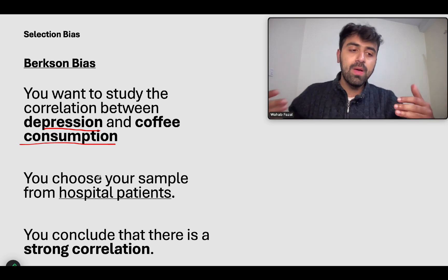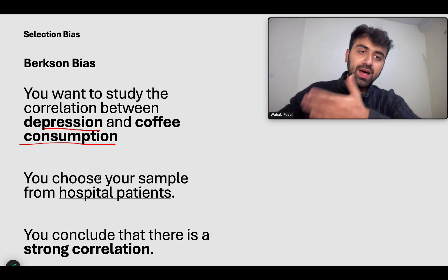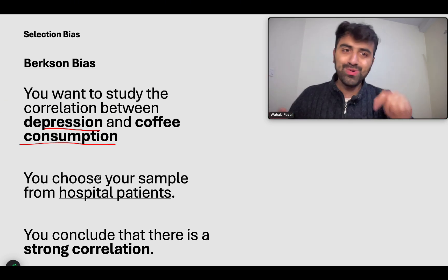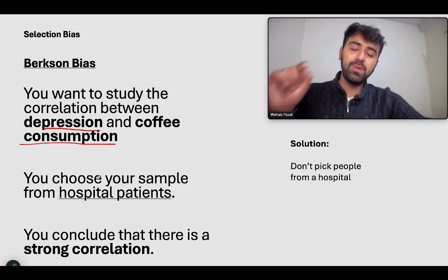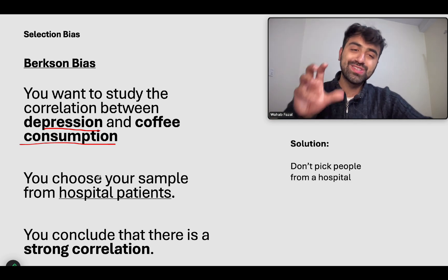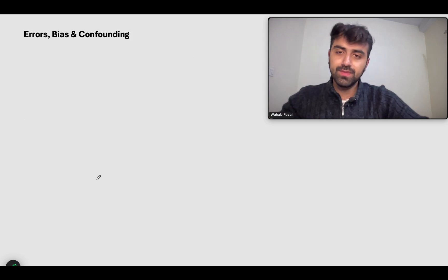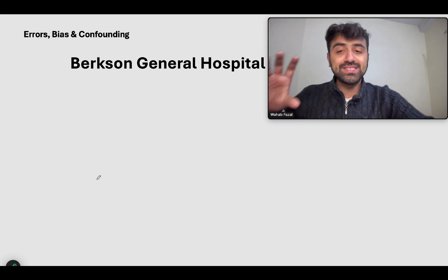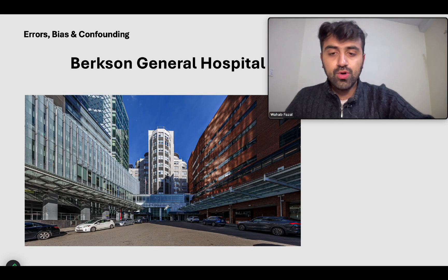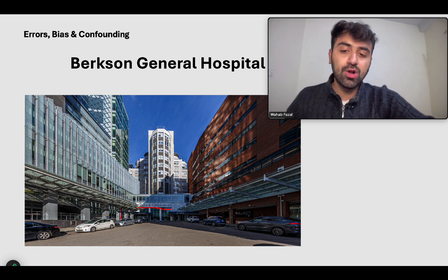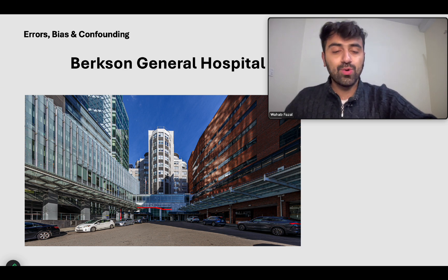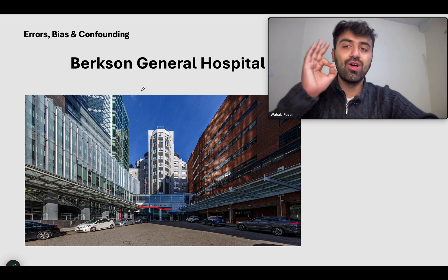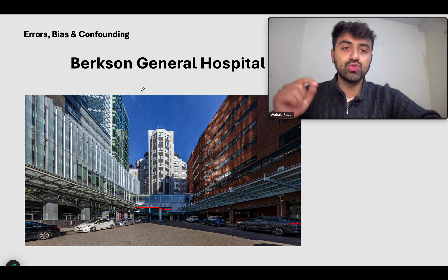If you're trying to study depression in the ICU, then maybe you can take patients from the ICU. But if you're studying the correlation between depression and coffee consumption, you can't do that in a hospital. The solution: don't pick people from a hospital if you want to do a study that applies to the general population. I remember this as 'Berkson General Hospital' — just like Massachusetts General Hospital or MGH — so that you remember Berkson bias occurs when you choose people from a hospital.